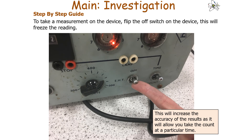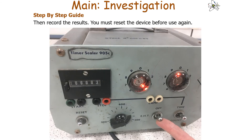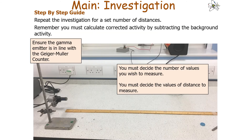To take a measurement on the scalar, flip the switch on the device to freeze the reading. This increases accuracy as it allows you to take the count at a particular time. Record your results, then reset the device before use again. Repeat the investigation for a set number of distances. Remember to calculate the corrected activity by subtracting the background activity from your measured activity, and ensure the gamma emitter remains in line with the Geiger-Müller counter throughout.